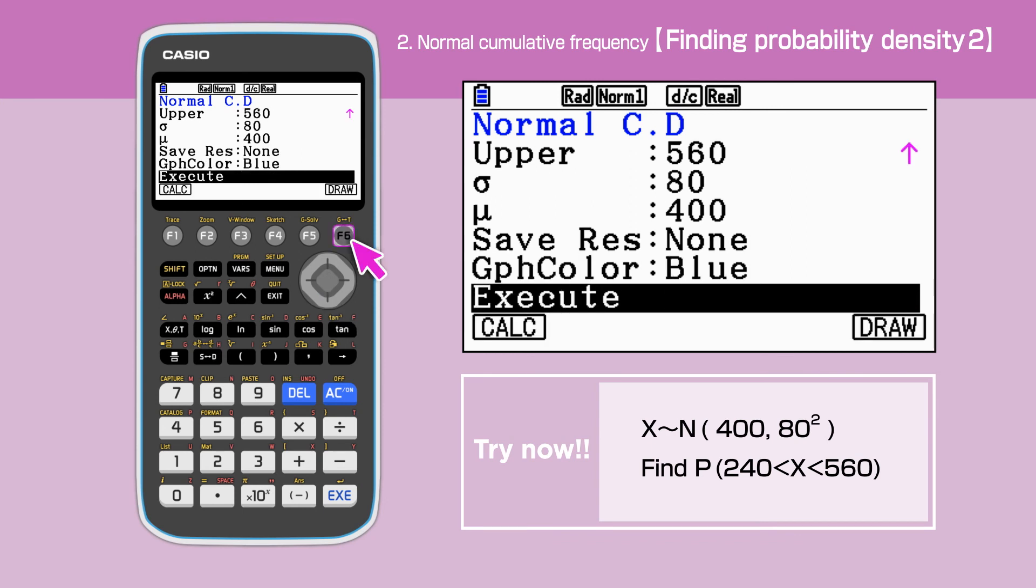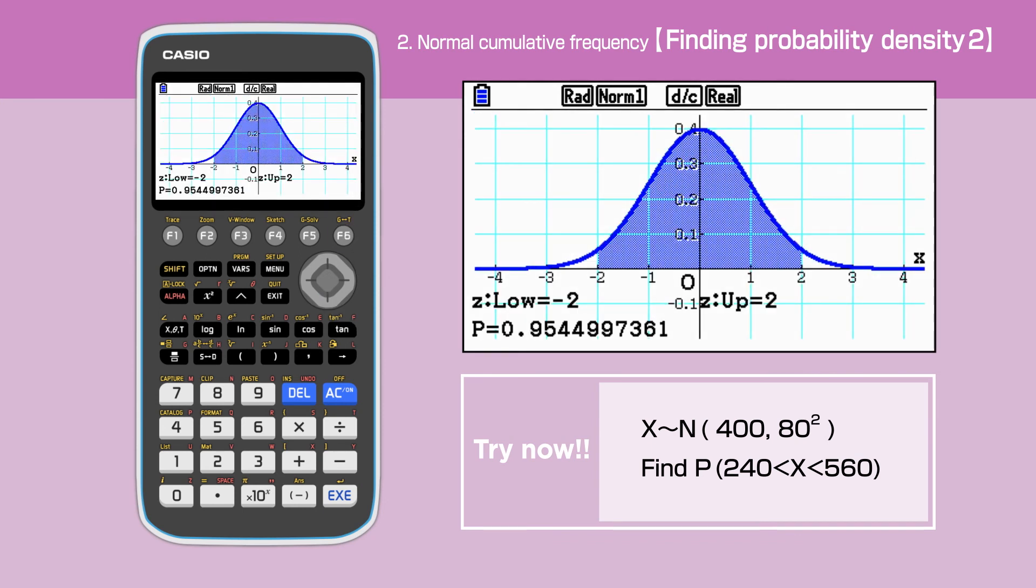Highlight Execute and press F6 to draw the graph. The normal distribution graph is drawn and the answer for this question is 0.954.